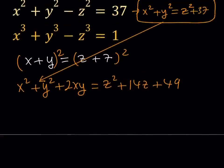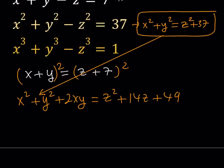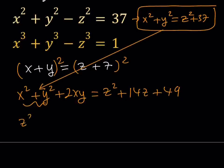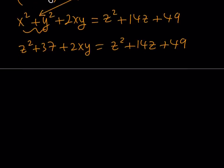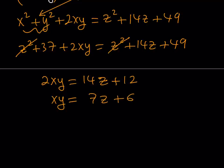So now, let's go ahead and replace x squared plus y squared with that. And that's going to give us z squared plus 37 plus 2xy equals z squared plus 14z plus 49. This equation might look a little complicated, but don't worry about it. This will work. Z squared cancels out. And now, from here, my goal is to get xy in terms of z. So, isolate 2xy, we get 14z plus 49 minus 37. That is going to be 12. Divide both sides by 2. xy equals 7z plus 6. Great.